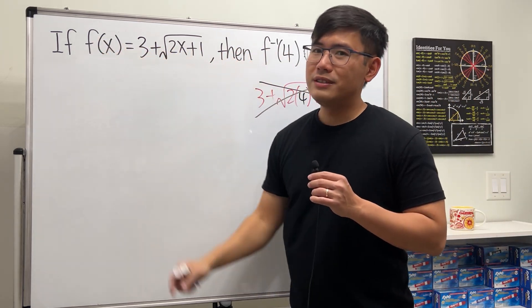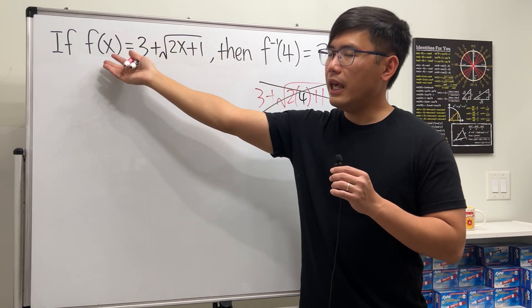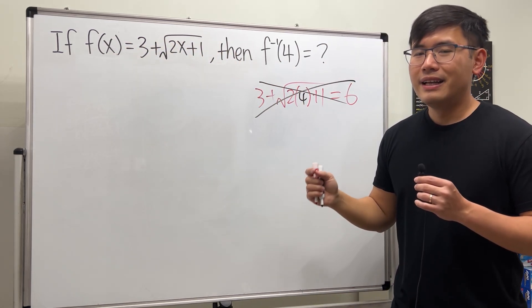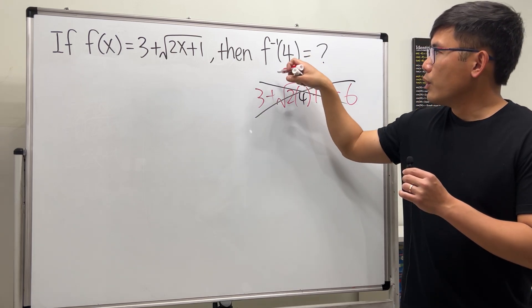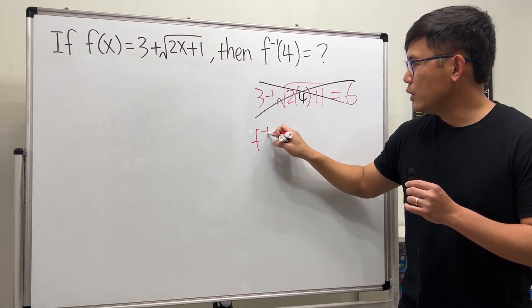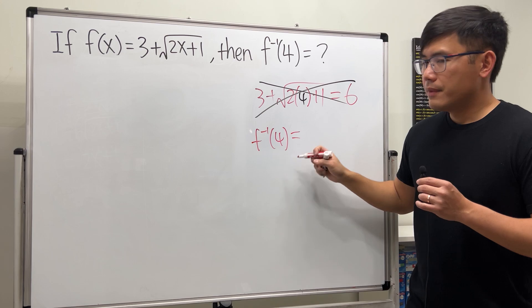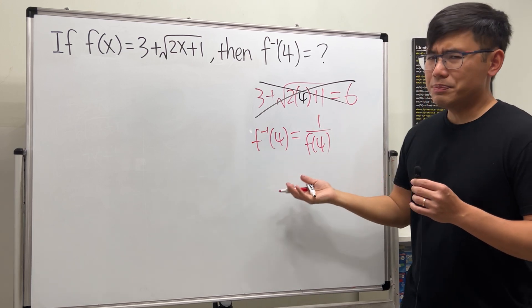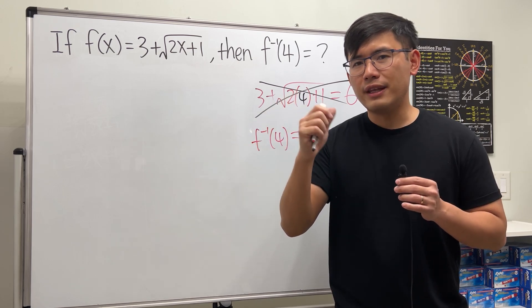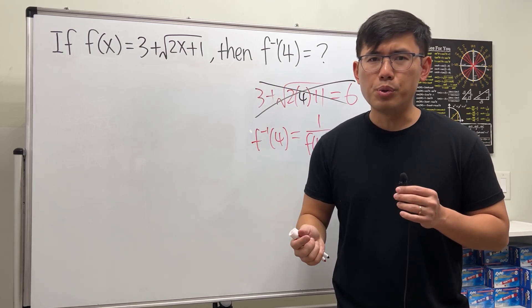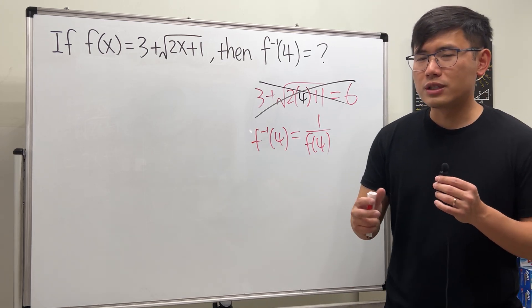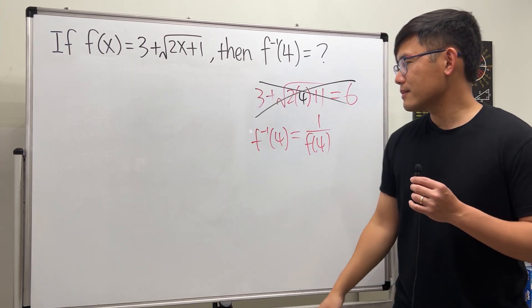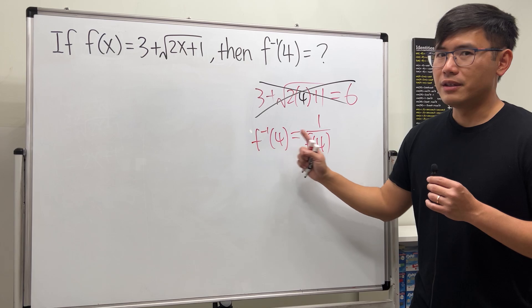Here's another common mistake: when you see this f with a negative 1 right here, if you write it as 1 over f of 4 just because we know that for example 5 to a negative 1 power is 1 over 5, it's just a reciprocal. But unfortunately that only works for numbers and also variables. When we have functions it does not work like this.